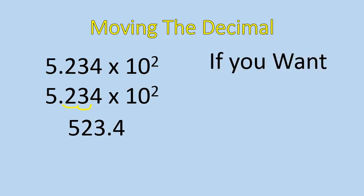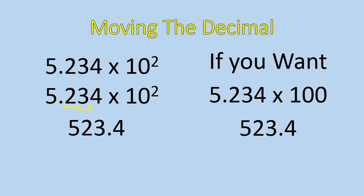If you want to, you can write it all out: 5.234 times 100, which is 10 to the power of 2. 10 times 10 is 100, and you'll get the same answer. But the whole point of writing something with the power of 10 is so that you don't have to write it all expanded out. The whole point is so that you can just shift the decimal and make your life a little bit easier. So what we're going to do is do a couple of practice problems just shifting the decimal.